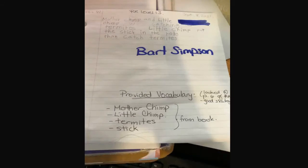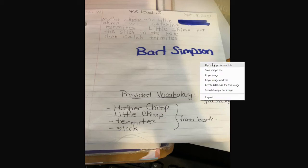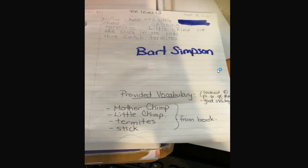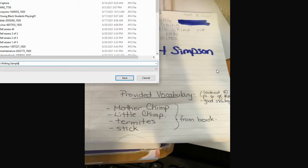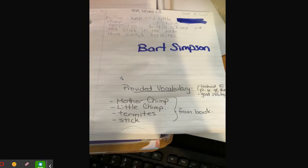It shouldn't be here in Edna Krabappel's portfolio. I'm going to right-click — or if I'm on a Chromebook, I'm doing a two-finger click on the trackpad, or using the right mouse button — and up will pop a little menu. We're going to choose Save Image As, and I'll name it 'Bart Simpson writing sample.' That saves to my desktop or my downloads folder on a Chromebook.